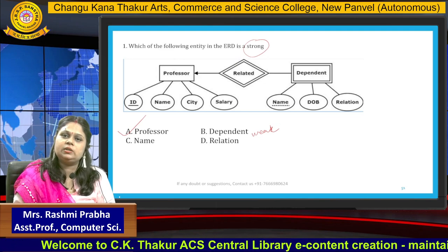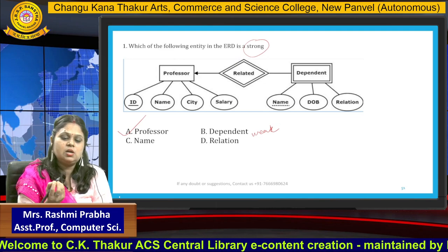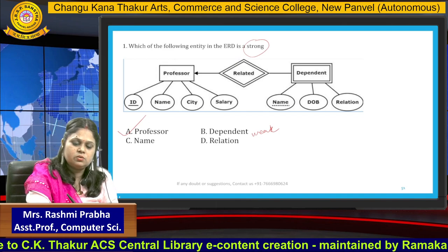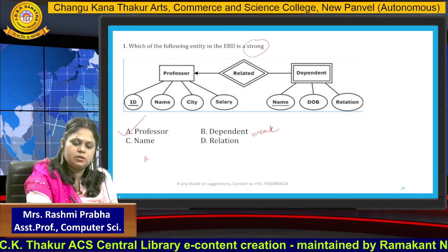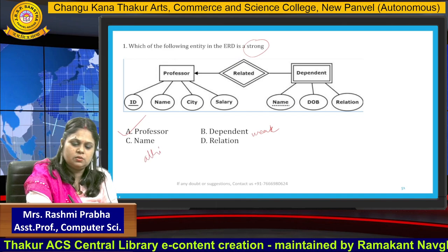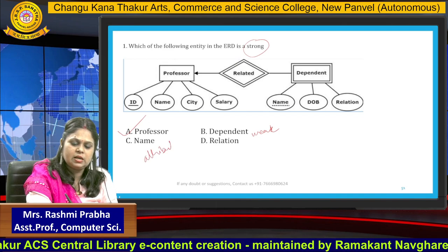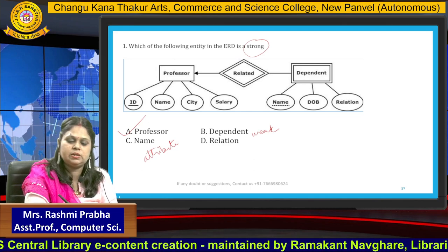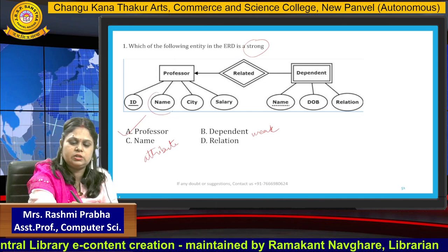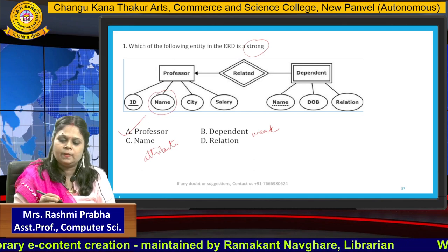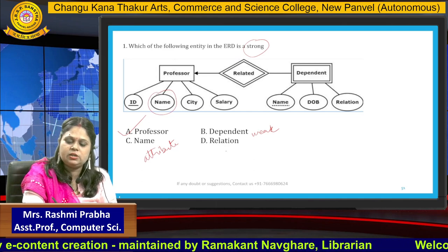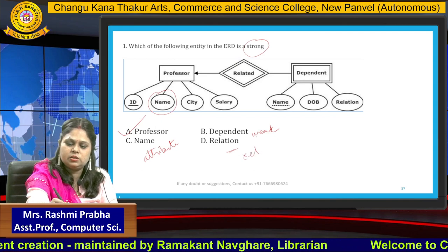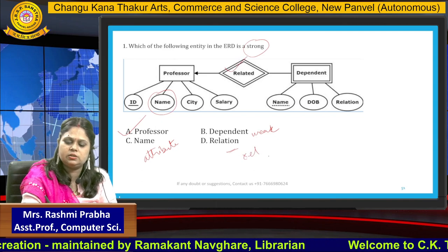This is how you solve such questions in the examination. When the option is 'name,' name is an attribute — represented by an oval shape, as we have seen in previous classes. And when the option is 'relation,' that is a relationship, not an entity.